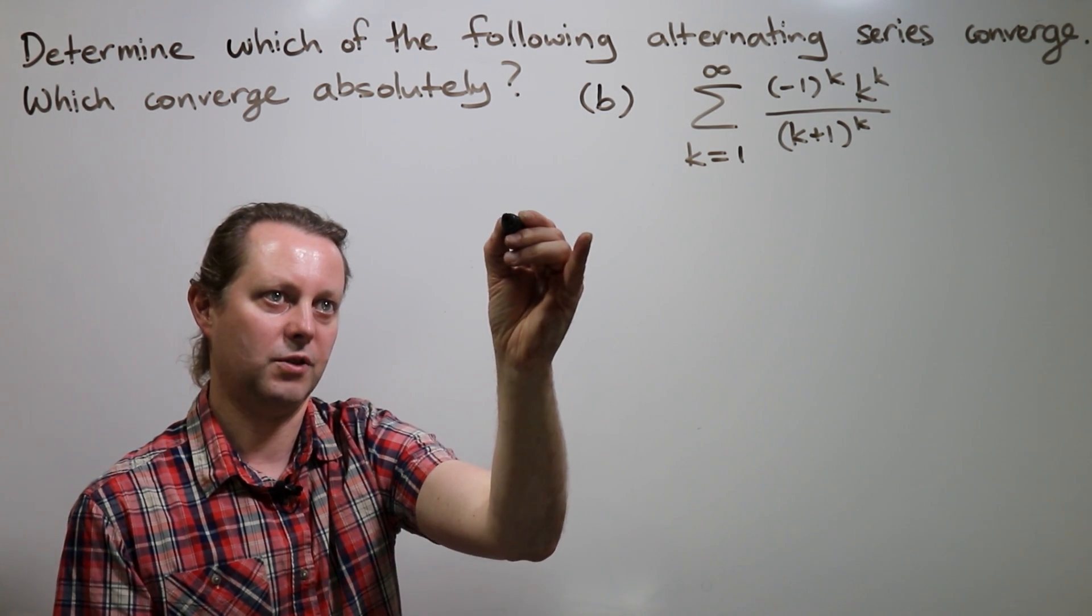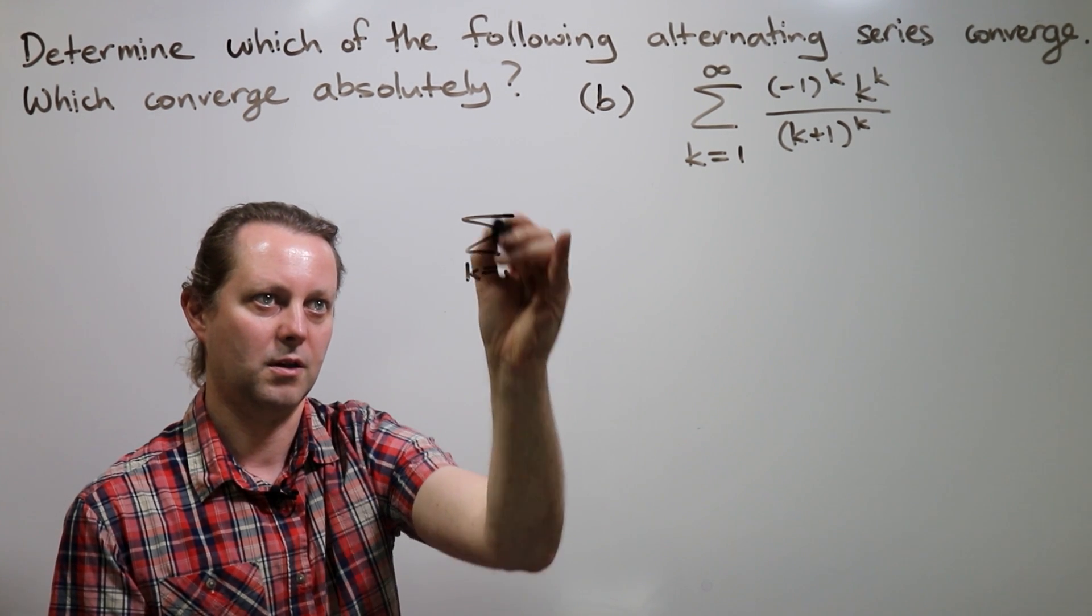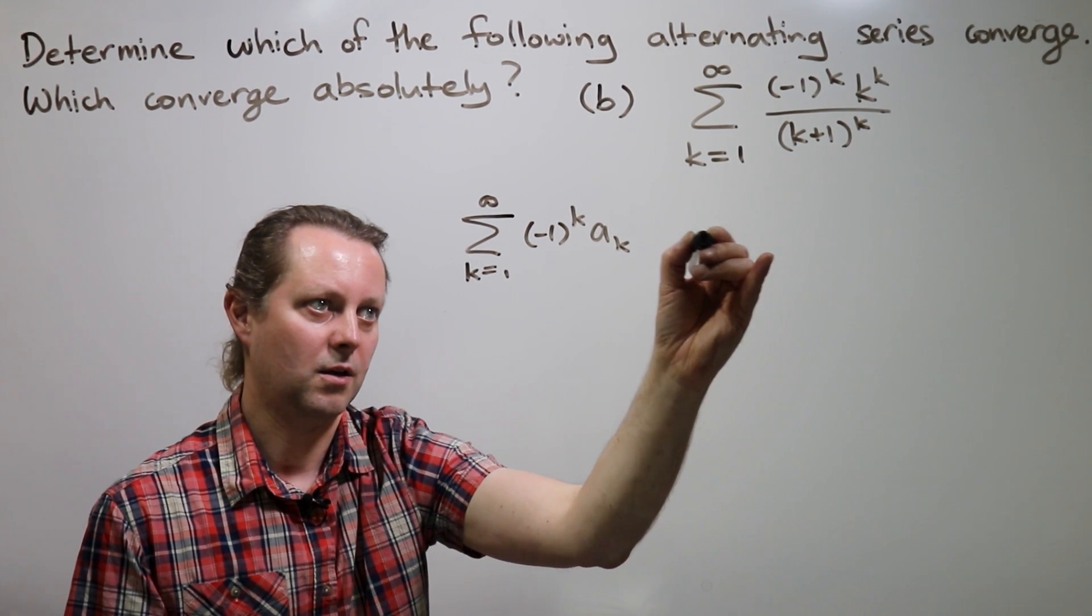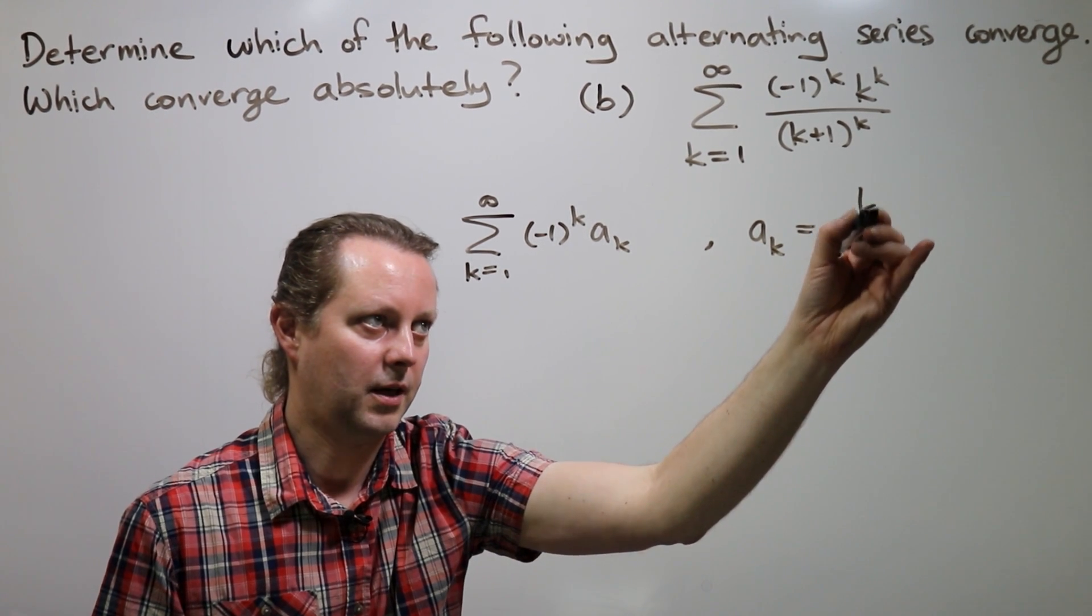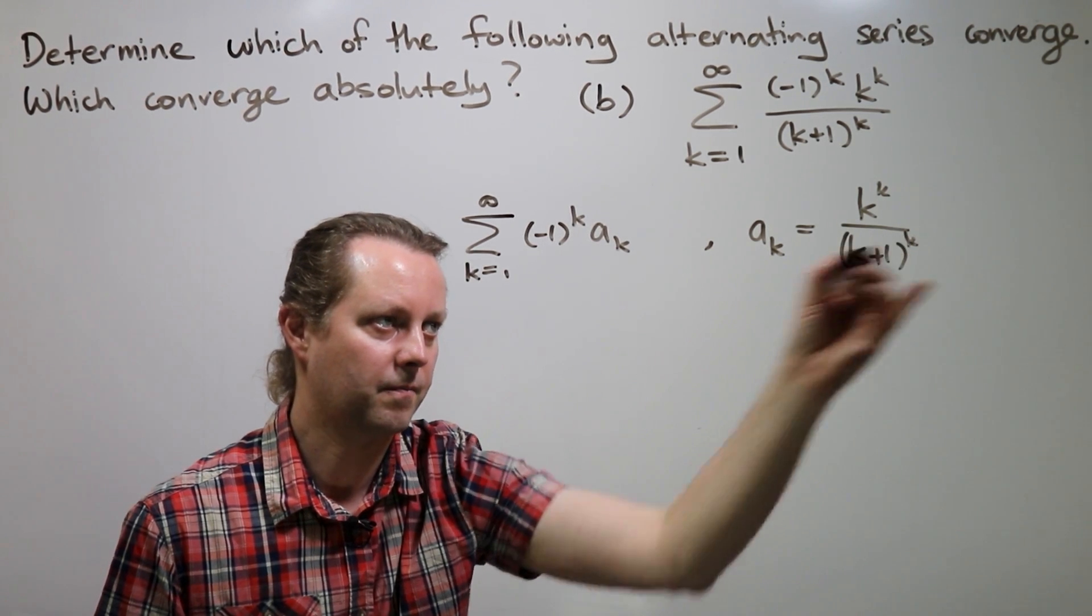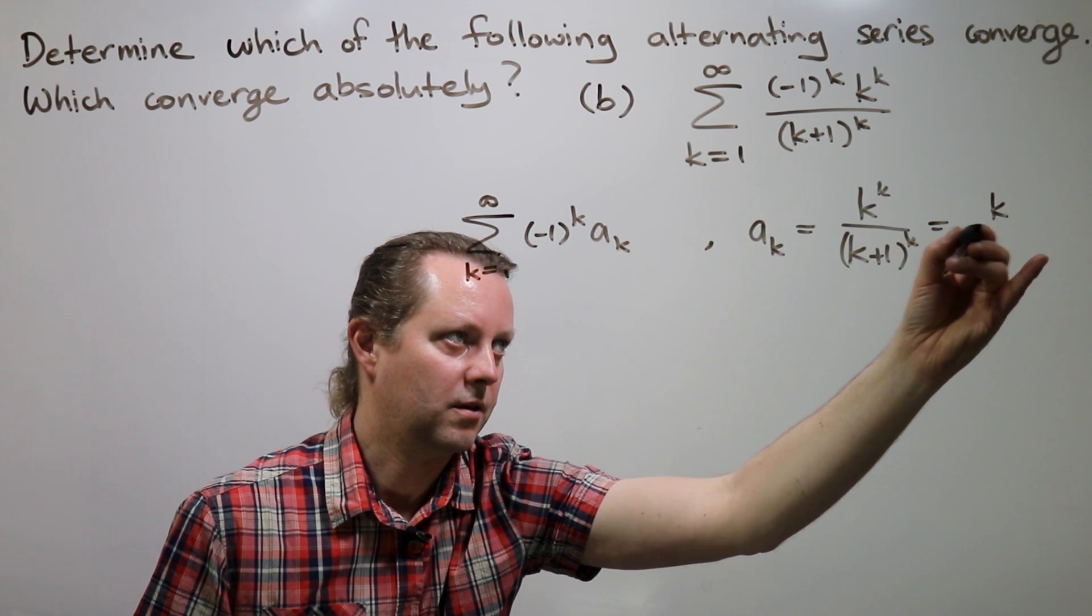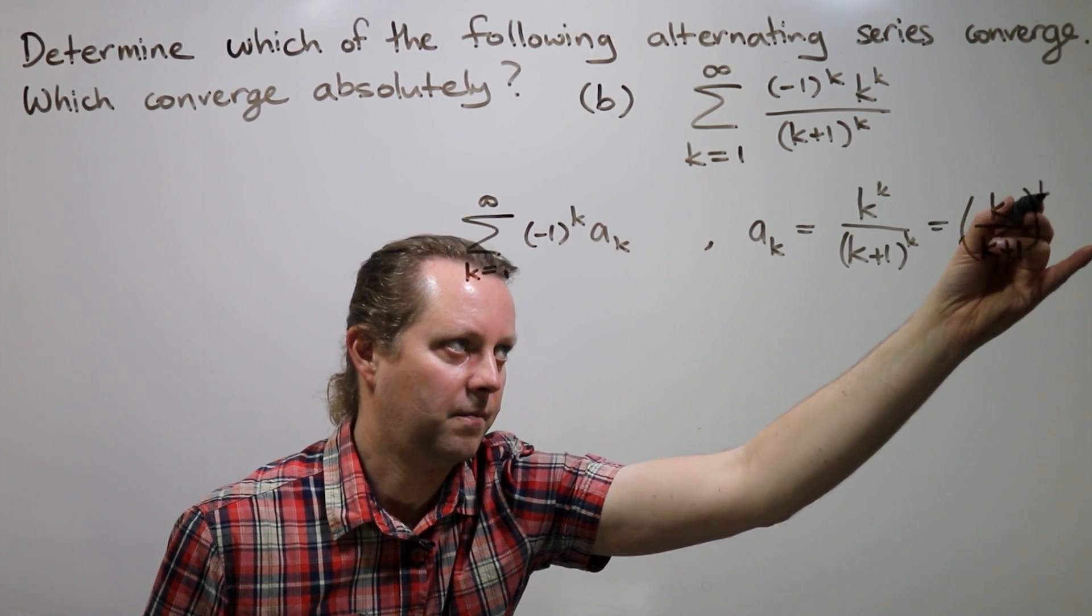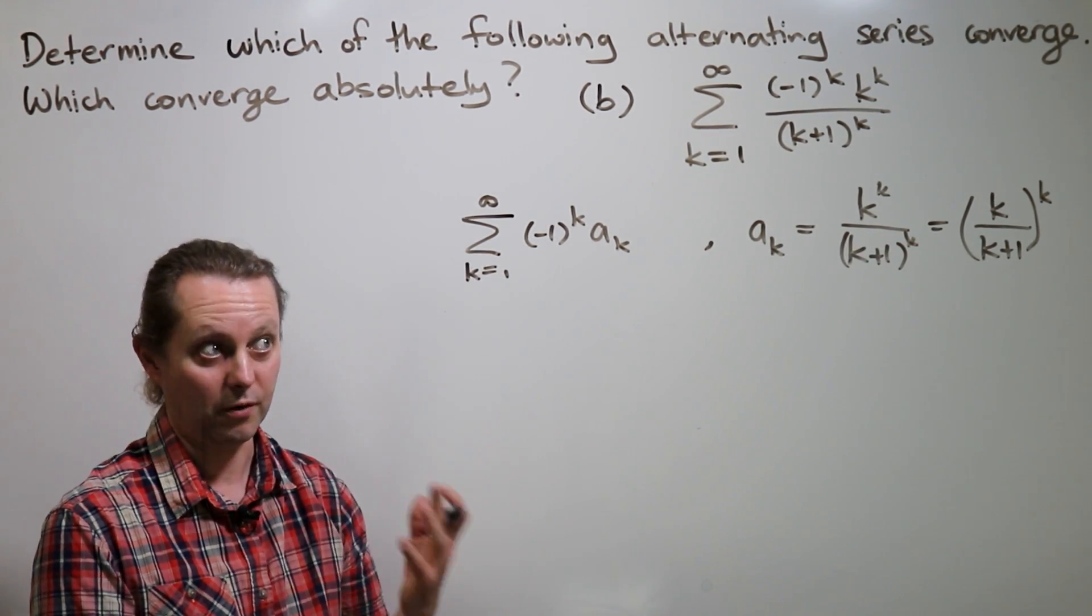So let's first of all give the terms a name. So I'll write the series as minus one to the k times a_k, where a_k is k to the k over (k+1) to the k. Maybe it's useful to write it like k over (k+1) to the k. Now we really want to know does it have a limit of zero.